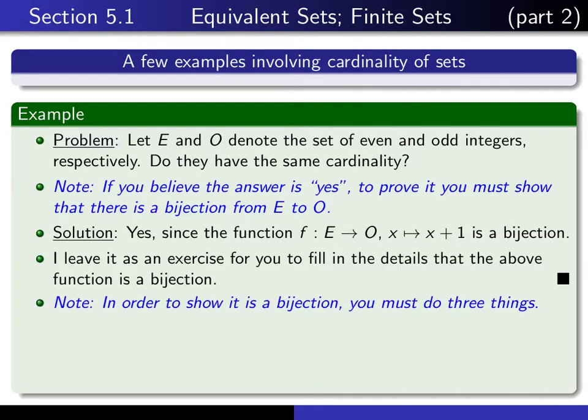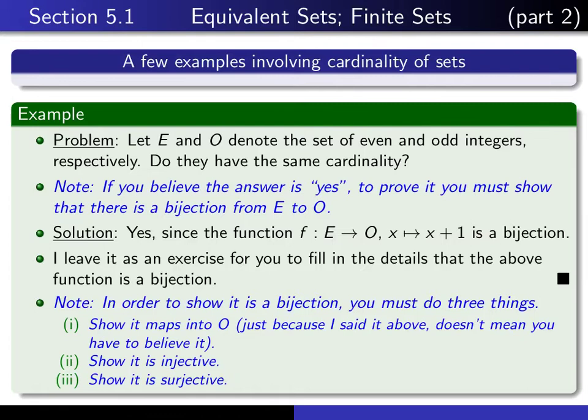But note that in order to prove that it's a bijection, there are actually three things, and not just two things for you to do. Of course, you'd have to prove that it's both injective and surjective, but you also have to prove that it really does what we say it does, that it really maps E into O. I mean, just because I say that it maps E into O doesn't mean that I'm right about that. It requires a little proof. You have to show that if x is even, then x plus 1 is odd. It's not difficult to show, but it is something that should be included if you're writing out a formal argument.